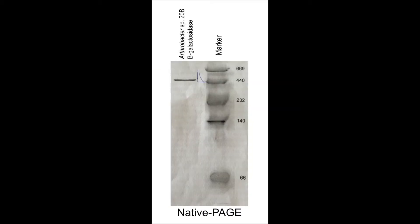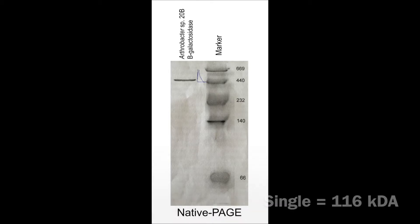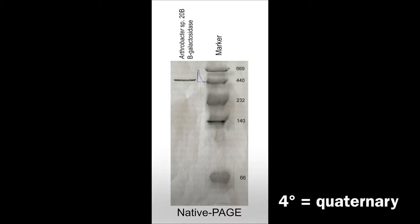The isolation and purification step was further analyzed in Figure 3 using a native PAGE gel. This differs from the SDS-PAGE gel because a native PAGE gel runs proteins in their native state to preserve quaternary structure. That is why in lane 1 we see a single band around 440 kilodaltons. From this we were able to tell that beta-galactosidase from Arthrobacter species 20B is a tetrameric protein made up of four individual subunits.